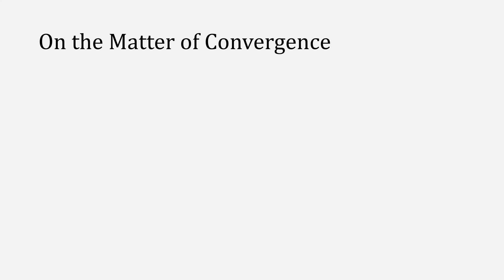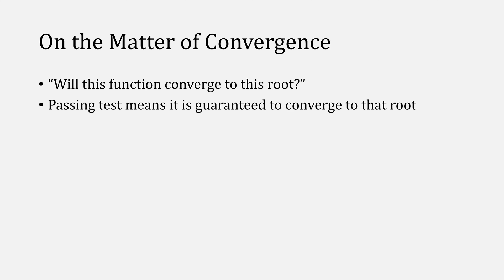Think of the convergence test as, will this function converge to this root? Passing the test means that it is guaranteed to converge to that root, and failing it means that there is no guarantee, so it can still converge even if it fails.